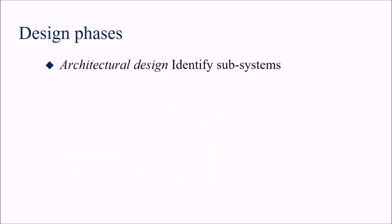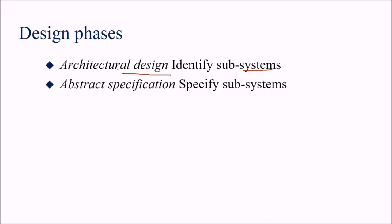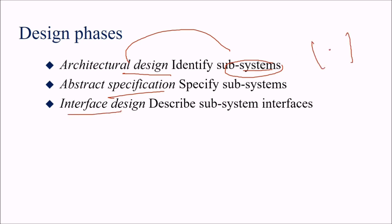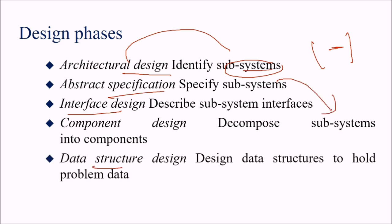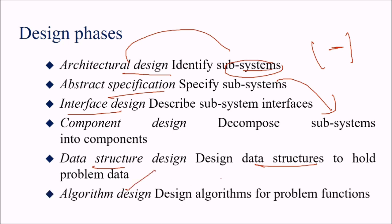In the design phase: architectural design identifies the subsystems; abstract specification specifies the subsystems; interface design describes the subsystems; component design decomposes the subsystems into components; data structure design specifies what data structures hold the problem data; and algorithm design covers the algorithms for problem functions.